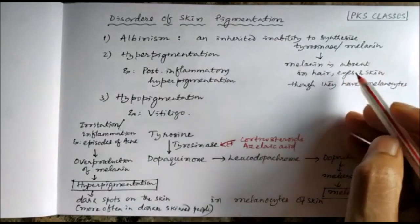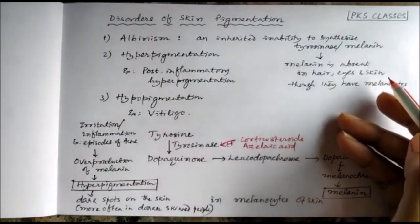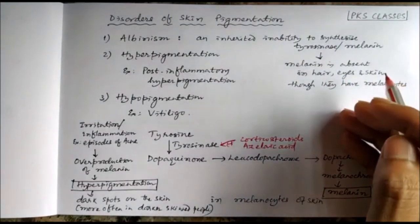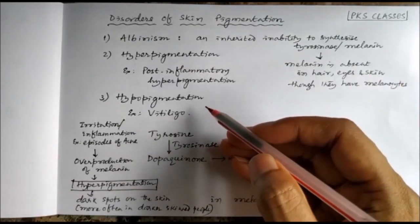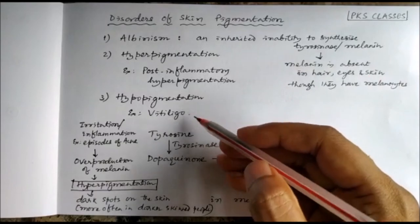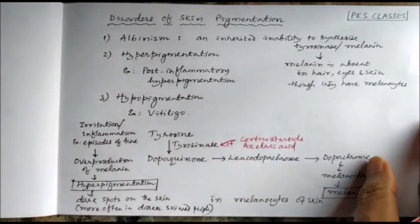Hypopigmentation: Vitiligo is a skin disorder which is characterized by hypopigmentation.